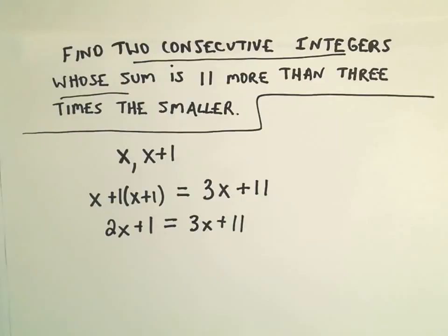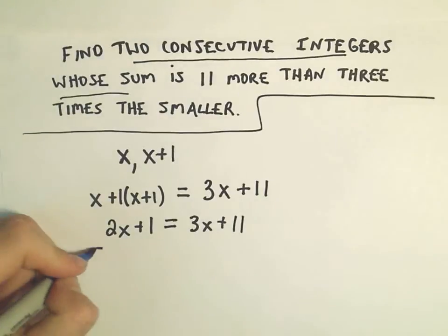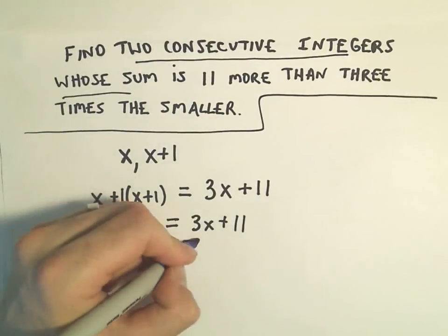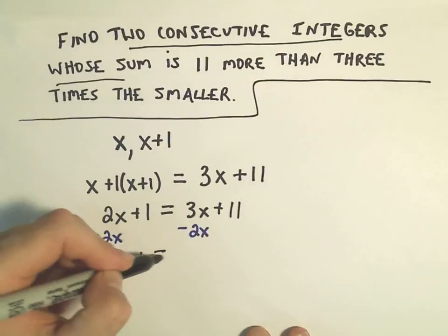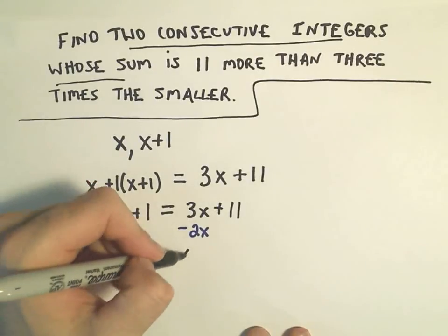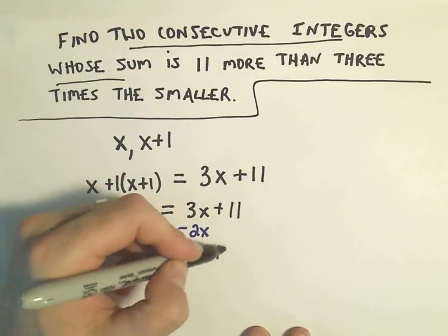I like to keep my x's positive, so I'm going to subtract 2x from both sides. On the left side, we're left with a positive 1. On the right side, we have 3x minus 2x, which is 1x, still with our plus 11.